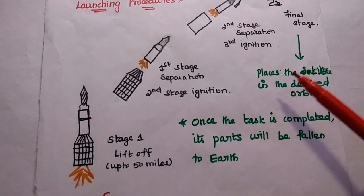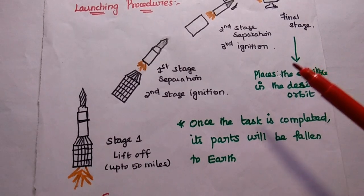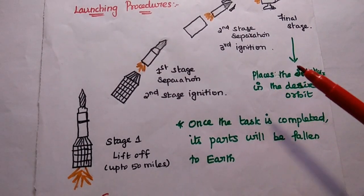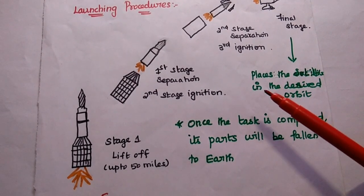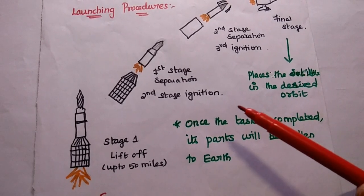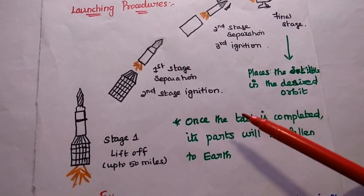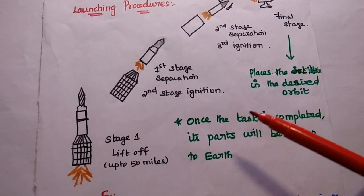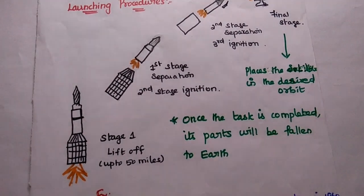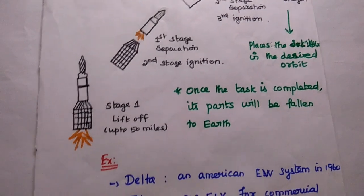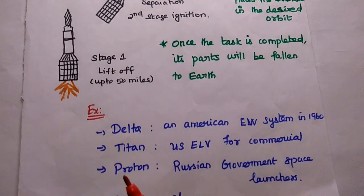Each stage has different fuel consumption. In order to make efficient use of the fuel, the excess mass of the launcher is fallen off as it moves upward on launch — that is called staging. Once the task is completed, its parts are fallen off or destroyed. That is called an expendable launch vehicle.